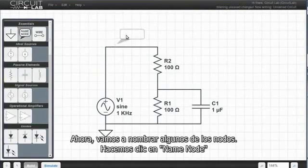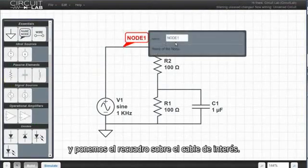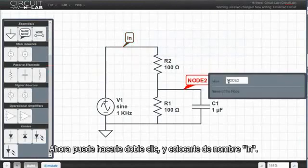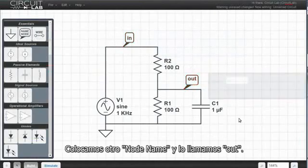Now let's name some of these nodes. So we click name node, and put this bubble with its little point on the wire of interest. Now I can double click, and I can call this one in. Drop another one, and call it out.